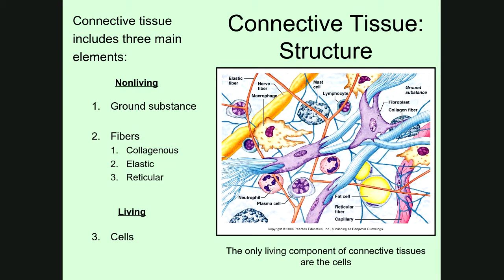There are a few things about connective tissue generally that you should know before we talk about specific types. Probably the biggest thing is its structure. Connective tissues are kind of strange in that all of them have a living component and also a non-living component. Listed under non-living are ground substance and fibers, and the living components of connective tissues are the cells.